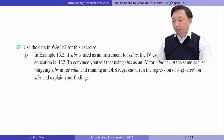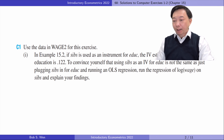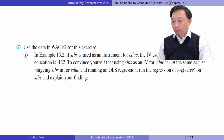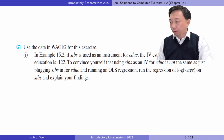Let's find answers to Computer Exercise 1. We estimate the return to education for men. In part 1, in example 15.2, if siblings is used as an instrument for education, the instrumental variable estimate of the return to education is 0.122. To convince yourself that using siblings as an IV for education is not the same as just plugging siblings in for education and running an OLS regression, run the regression of log wage on siblings and explain your findings.